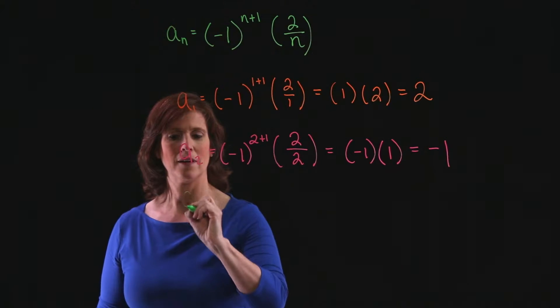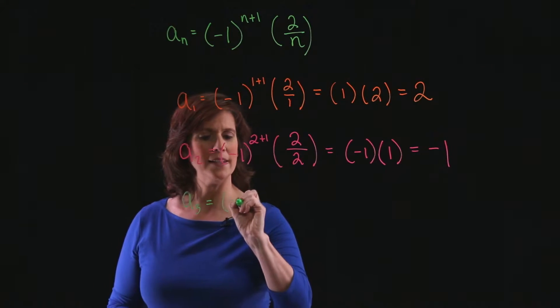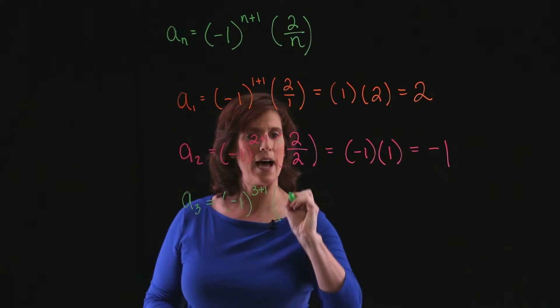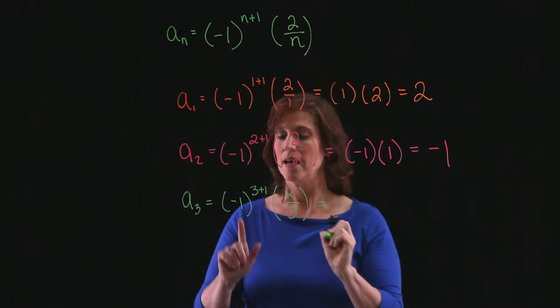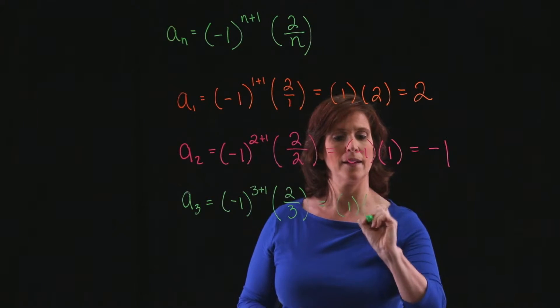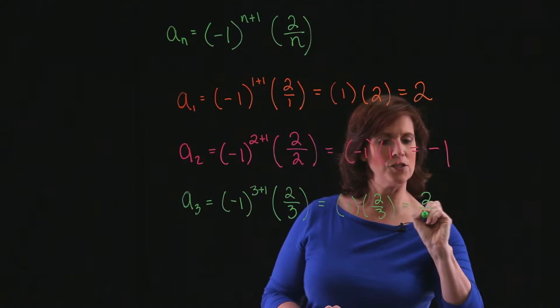For the third term, we'll have minus 1 to the 3 plus 1 times 2 over 3. Negative 1 to the fourth power is a positive 1 times 2 thirds is 2 thirds.